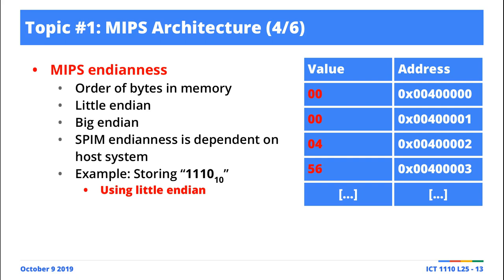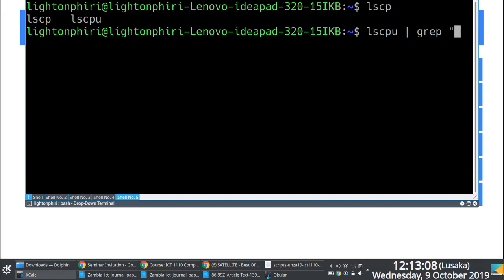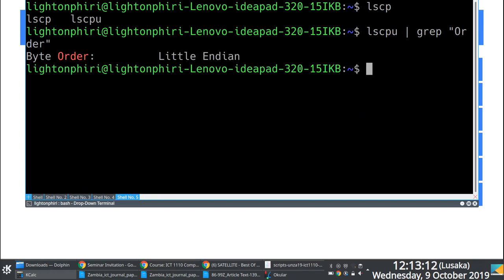Something else we mentioned is that when you're playing around with SPIM, depending on what sort of computer you're working with, it might turn out that the Endianness you observe might be different from a person using a completely different machine. The way these SPIM simulators like QTSPIM work is they present information based on the Endianness used on the host machine. In my case, my machine uses little Endian, so what I see in SPIM when viewing data in memory is from the perspective of little Endian.